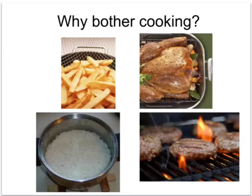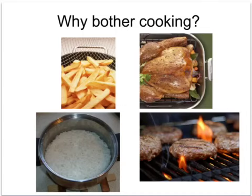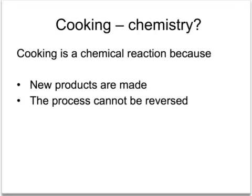This tutorial is all about why we cook food and the changes that occur in eggs, meat and potatoes when they are cooked. So why do we bother cooking? Here we have some chips, a nice roast chicken, some rice and some flaming beef burgers. The reasons why we cook food are to improve its taste and texture and to kill any microorganisms that might be lurking there. Of course, cooking is just a branch of chemistry and has chemical reactions because new products are made which can't be changed back into those we started with.